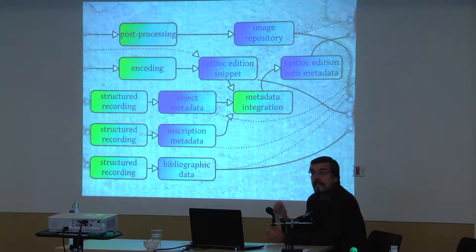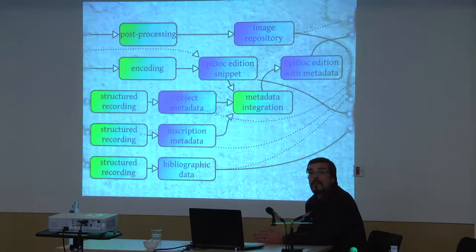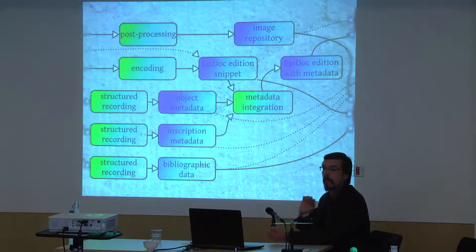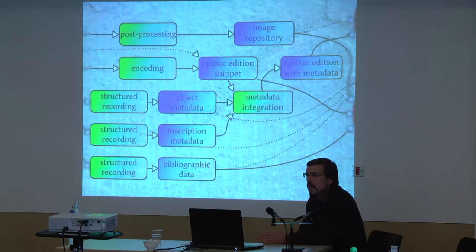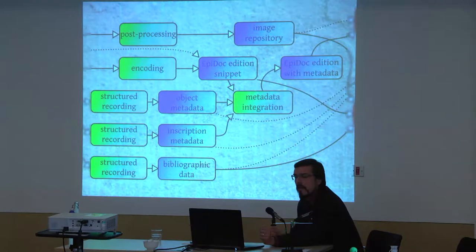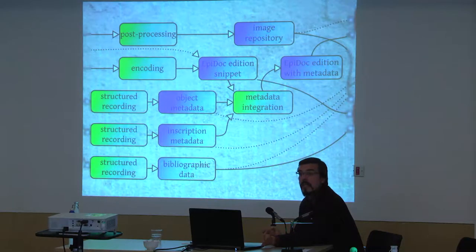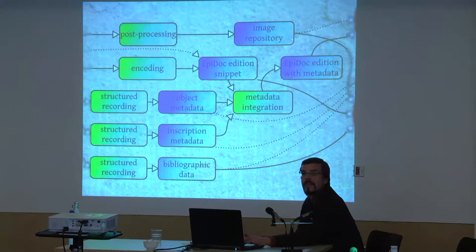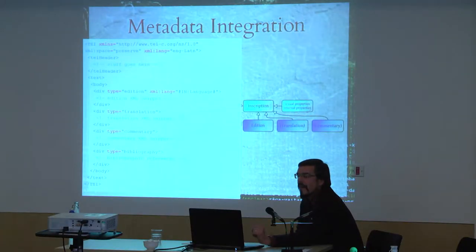At the moment, Gethin Rees does that — he's written a script which can extract the metadata from my tables and put them into the XML files, merging them with the XML snippets. I haven't talked in detail about how we publish and archive the images and the bibliography, because that's still in the works, basically. So how does this metadata integration thing work?